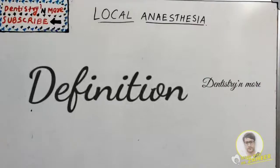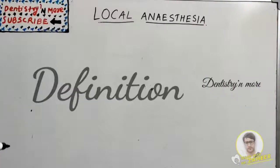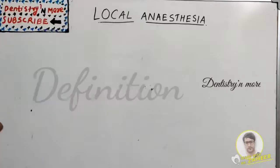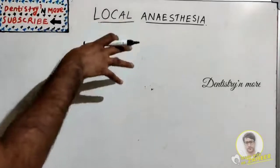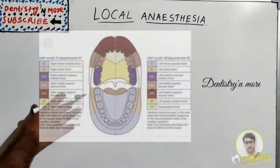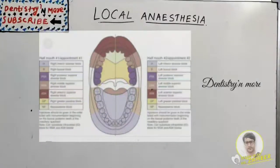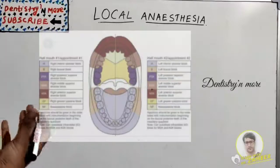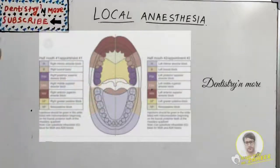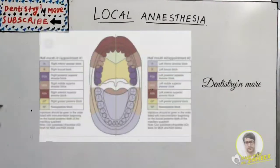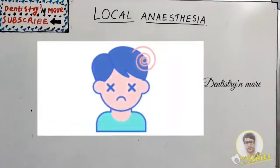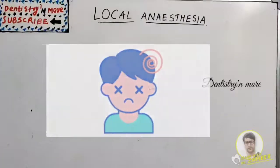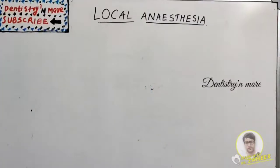Local anesthesia is defined as the loss of sensation in a circumscribed area of the body, caused by depression of excitation in nerve endings or an inhibition of the conduction process in peripheral nerves. It acts on the nerves either on the nerve endings or the conduction process. Importantly, it produces a loss of sensation without inducing loss of consciousness, unlike general anesthesia.